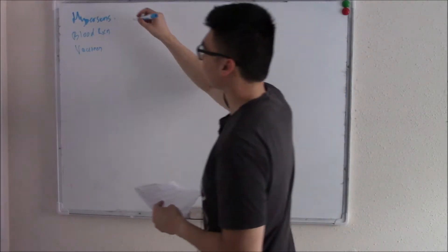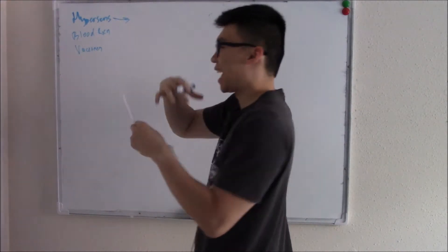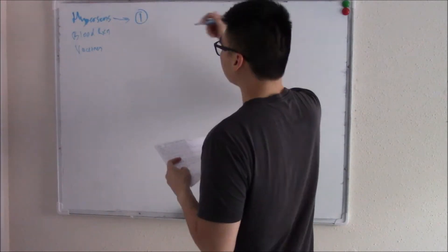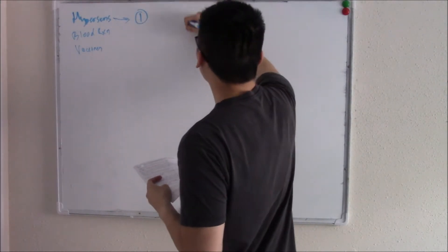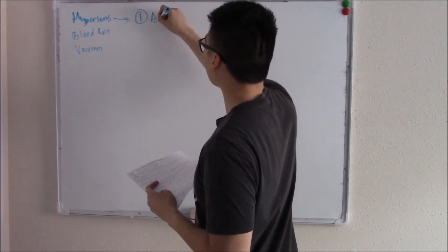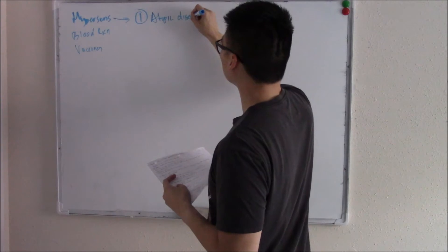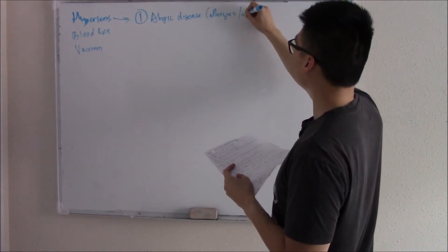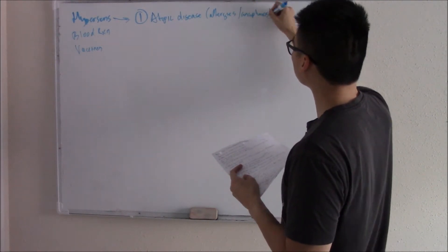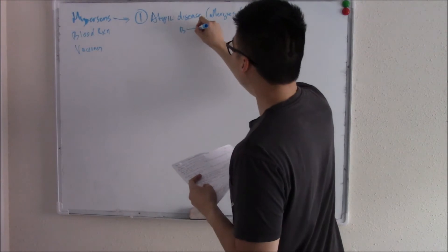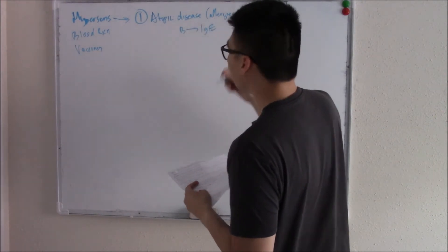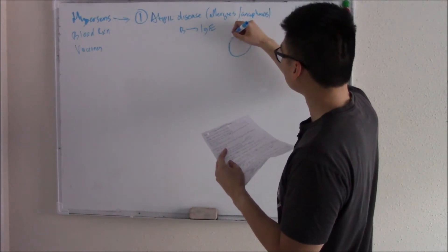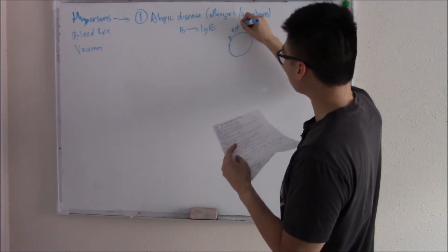So let's talk about hypersensitivity reactions. This is when there's an exaggerated reaction from your immune system and there are four types. The first type is usually what we think about when we think of allergic and atopic diseases. Your allergies, your atopic diseases, your anaphylaxis. What happens is your B cells make too much IgE, an exaggerated amount of IgE. Your IgE will coat your mast cells, especially your FCE receptor.